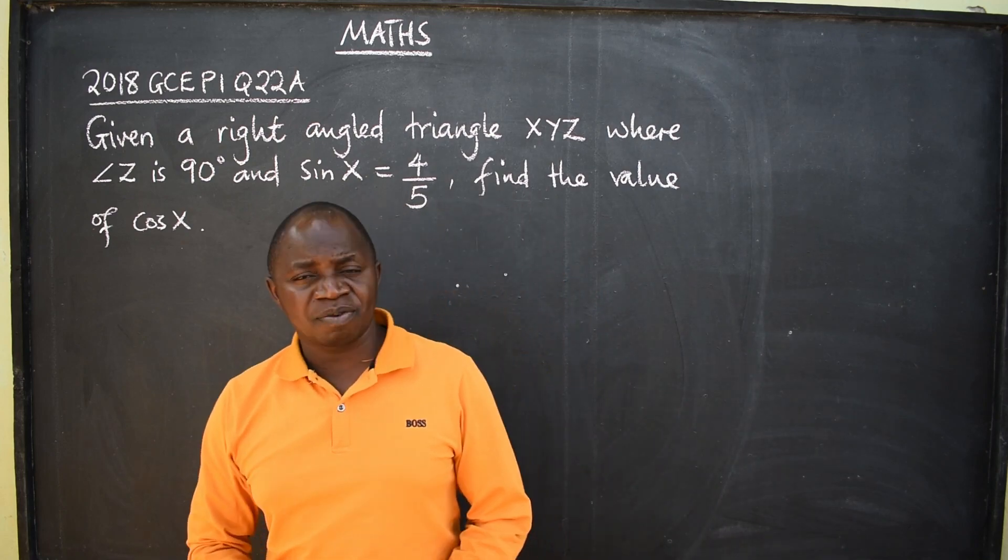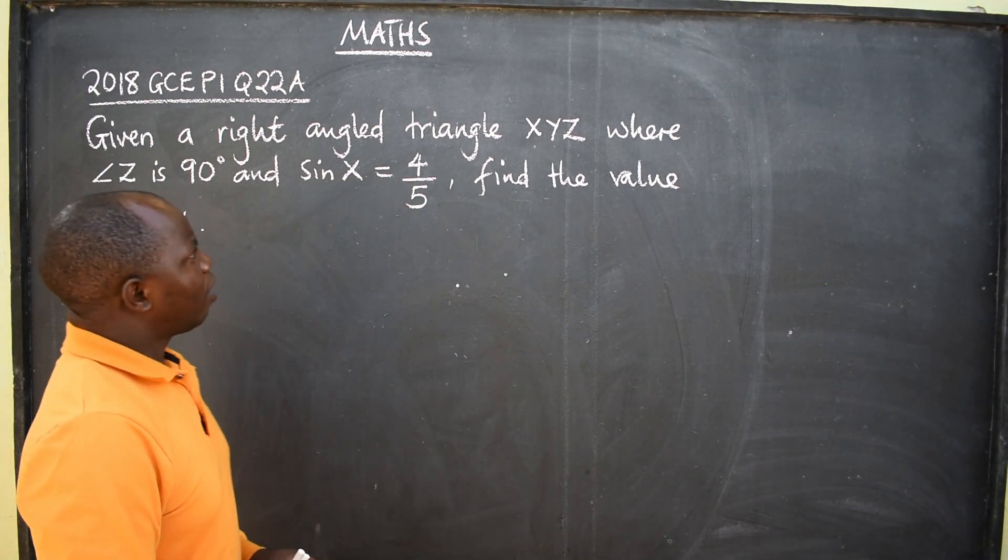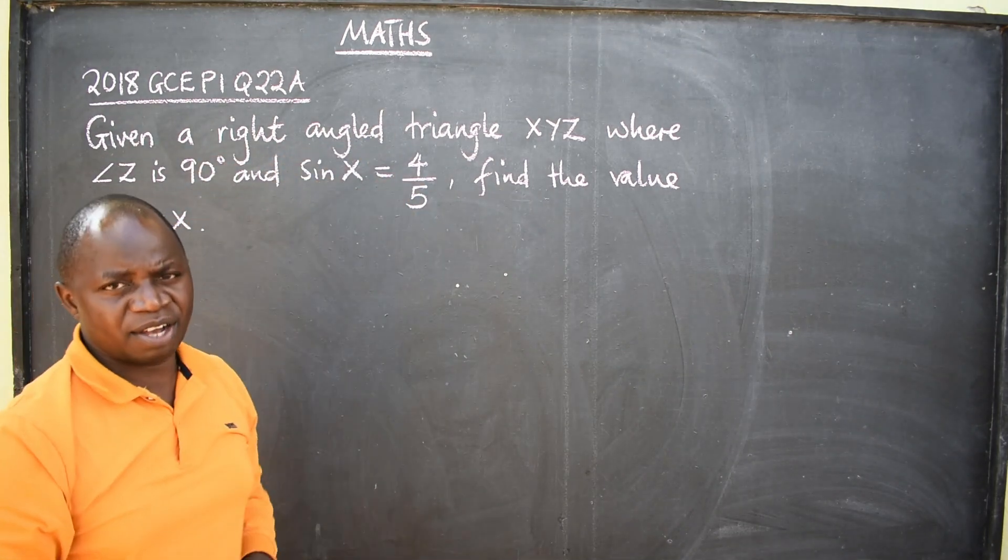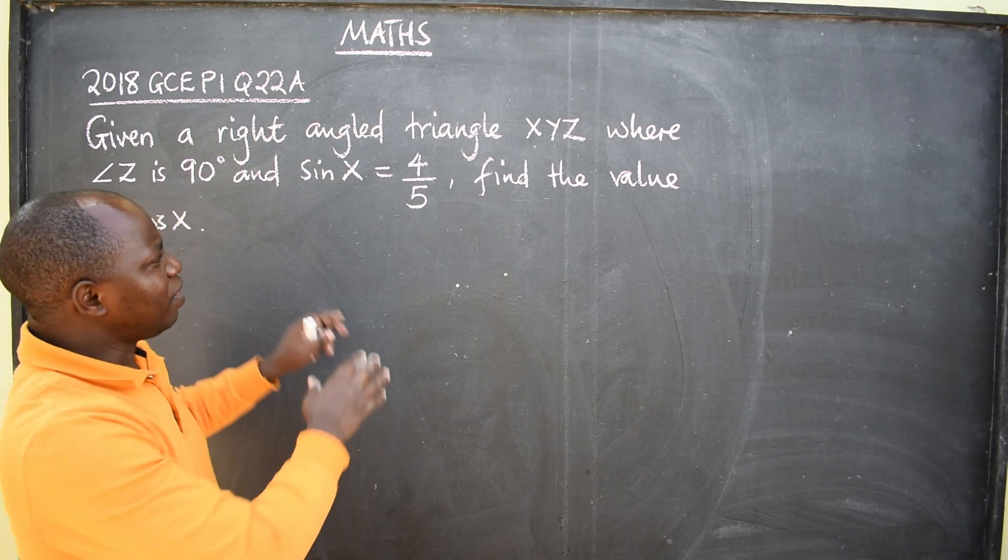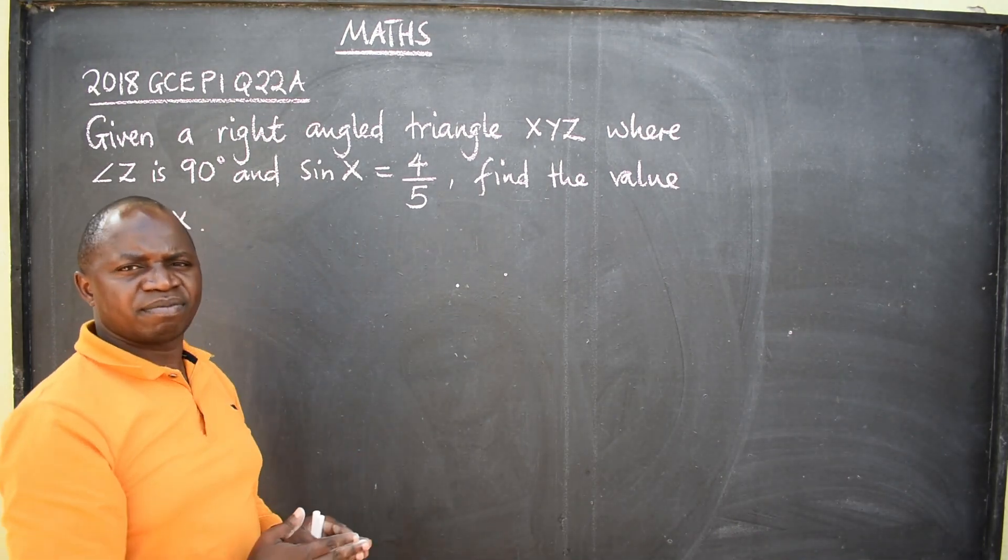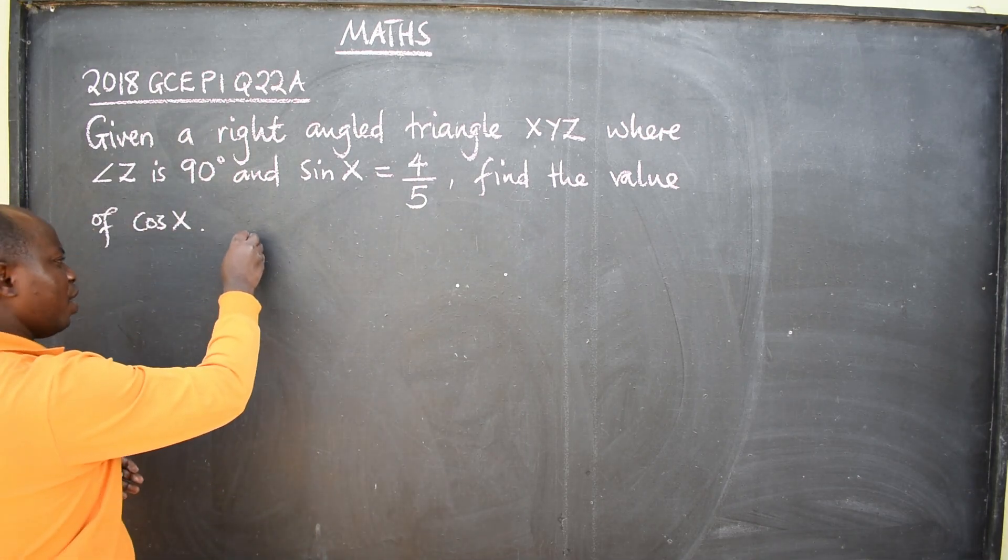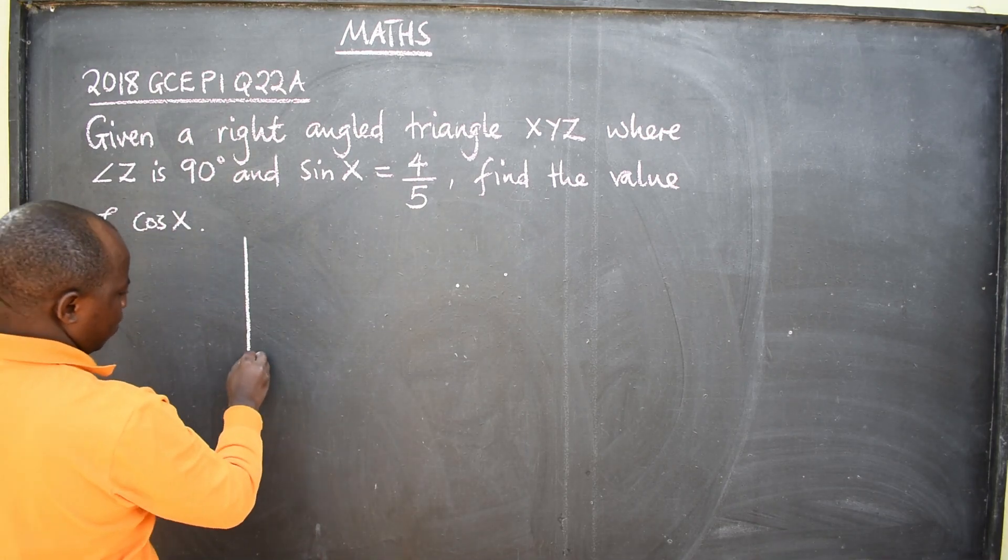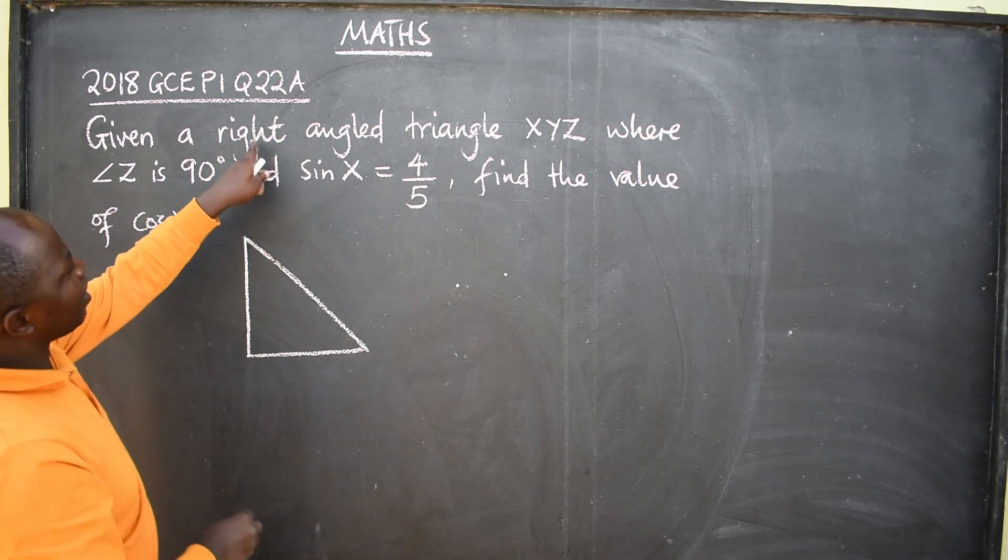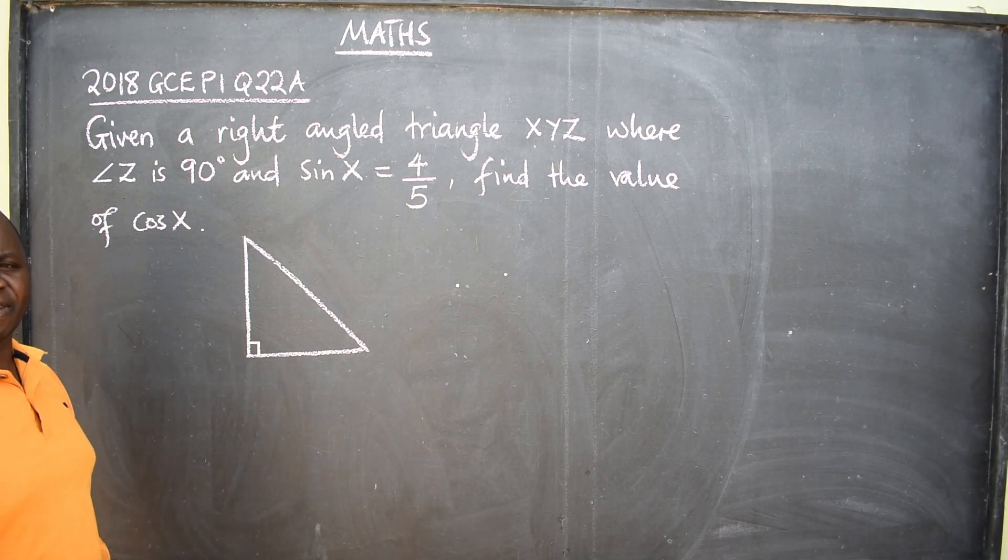The question is from a topic called trigonometry. You are told that given a right-angled triangle, if it is not drawn for you, you have to draw it. Point number one. So you are going to draw a right-angled triangle, like this. When we say right-angled triangle, it means it has got a 90 degree, like that.